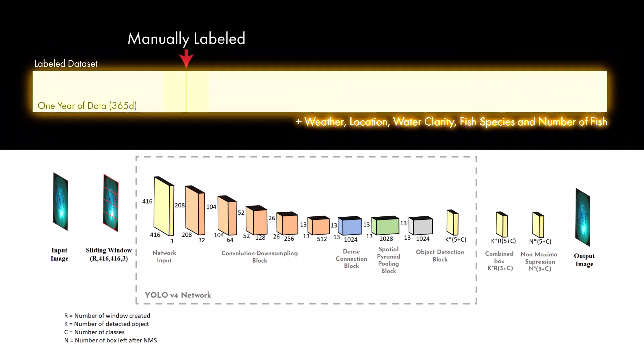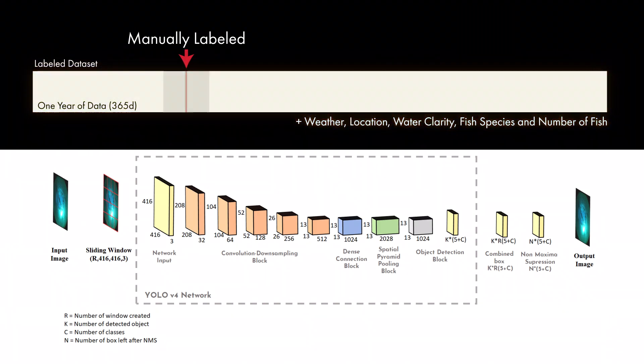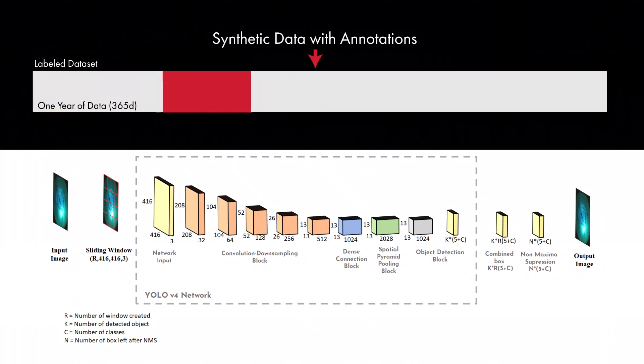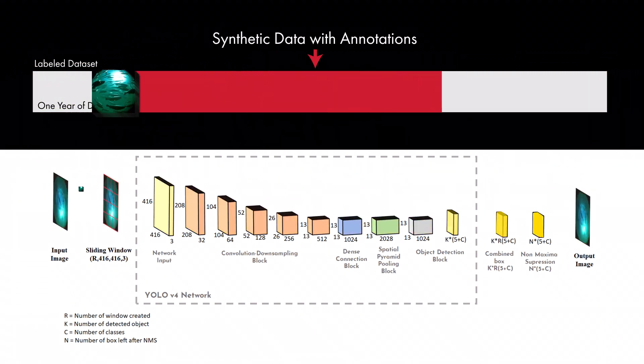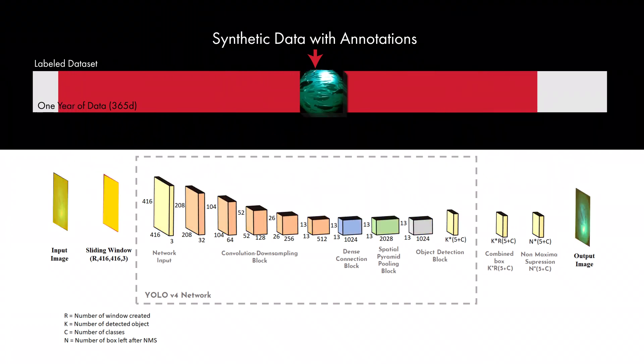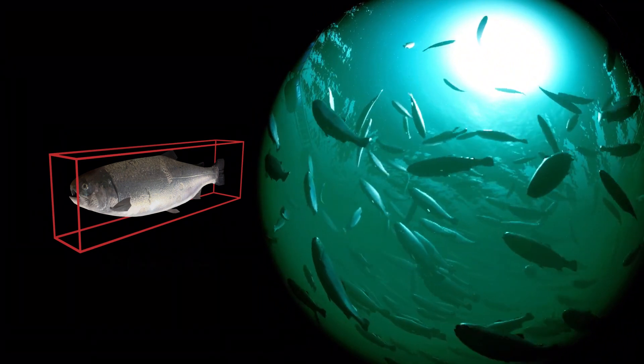Before labeling can even begin, it is necessary to obtain the sparse video data. We solve this issue by automating the generation of synthetic data with annotations using computer graphics. In order to achieve this, a realistic simulation is needed. By simulating realistic fish behavior and their environment via computer graphics,